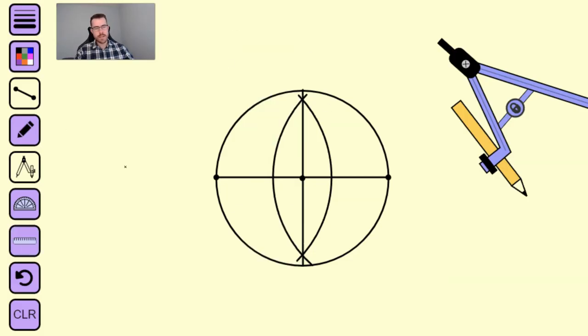Once you've done this, it's very simple. Grab your straight edge and connect those points together. You've now created a square inscribed inside your circle.